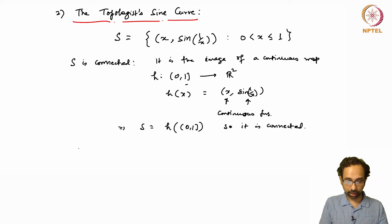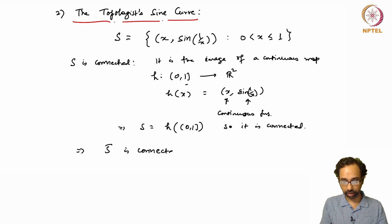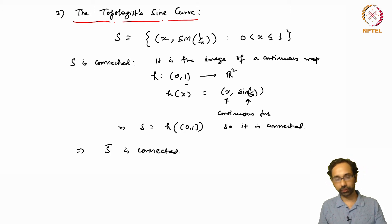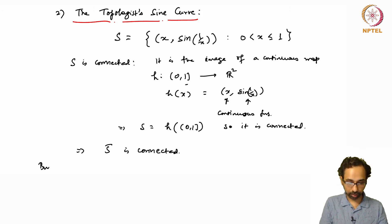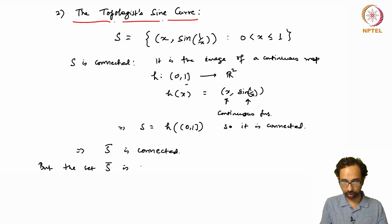This also implies that the closure of S is connected, as we have seen before: closures of connected sets are connected. But the set S-closure is not path connected.